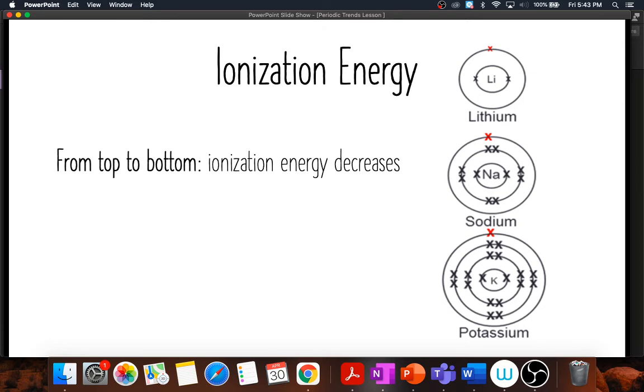Why does this make sense? It kind of goes back to our atomic radius. So when we go down a group, the atomic radius is increasing. So that attraction that exists between the protons in the nucleus and the electrons in the very outermost shell, it's farther away.